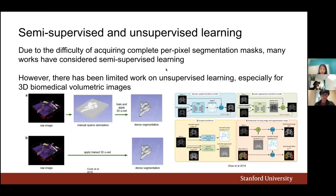Many works have tried to get around this difficulty by considering semi-supervised 3D segmentation, but there's been very limited work on unsupervised 3D segmentation. Here are two examples of methods that use limited data: the 3D U-Net on the left, and a one-shot model from Zhao.